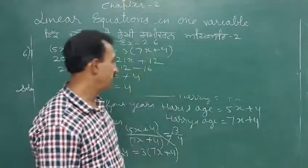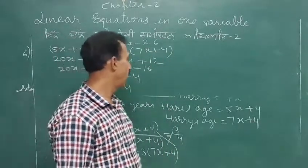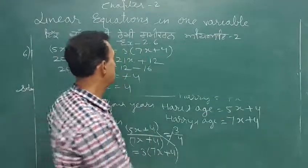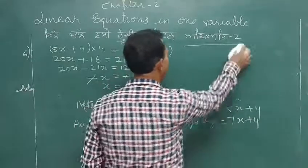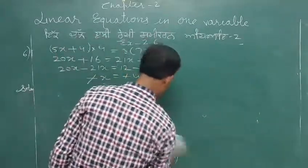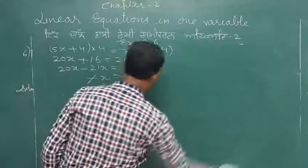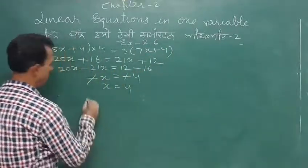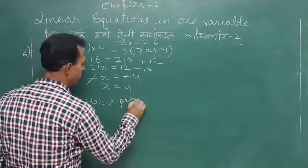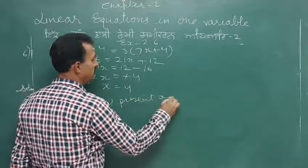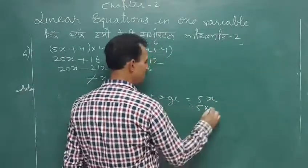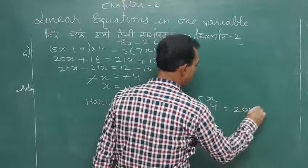Okay, what was Hari's present age? Hari was 5x. So Hari's present age is equal to 5 into 4, which comes out to 20 years.